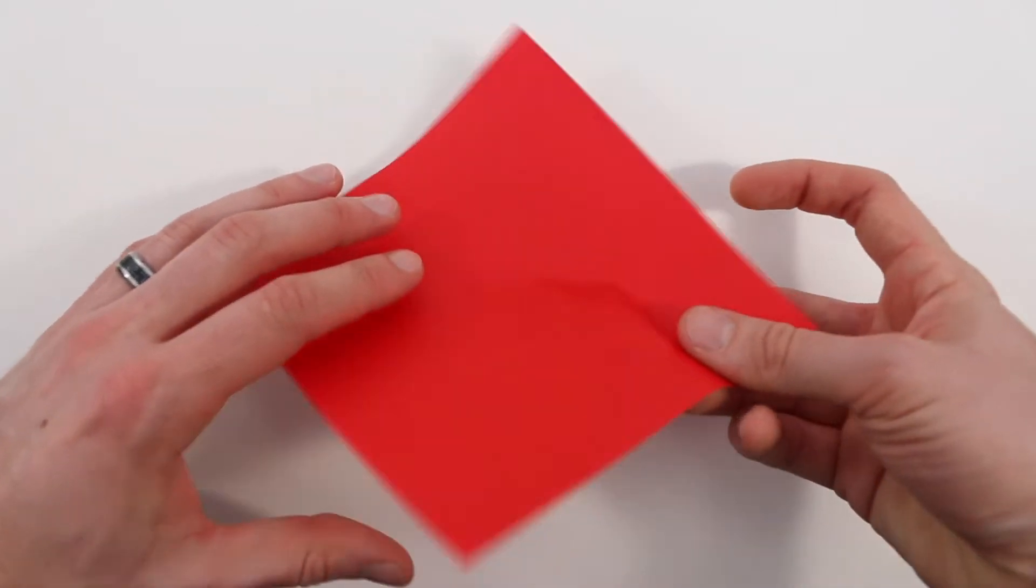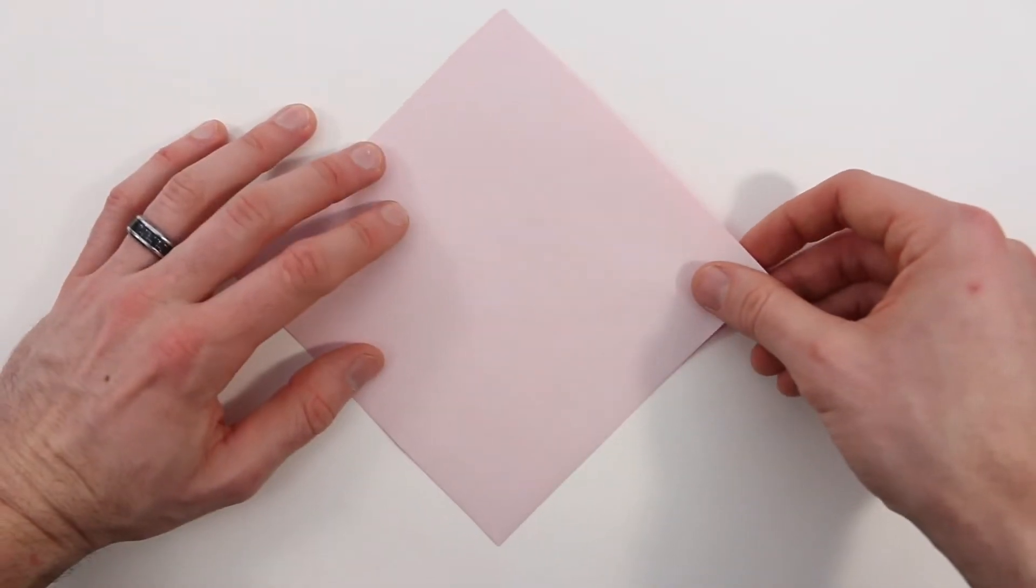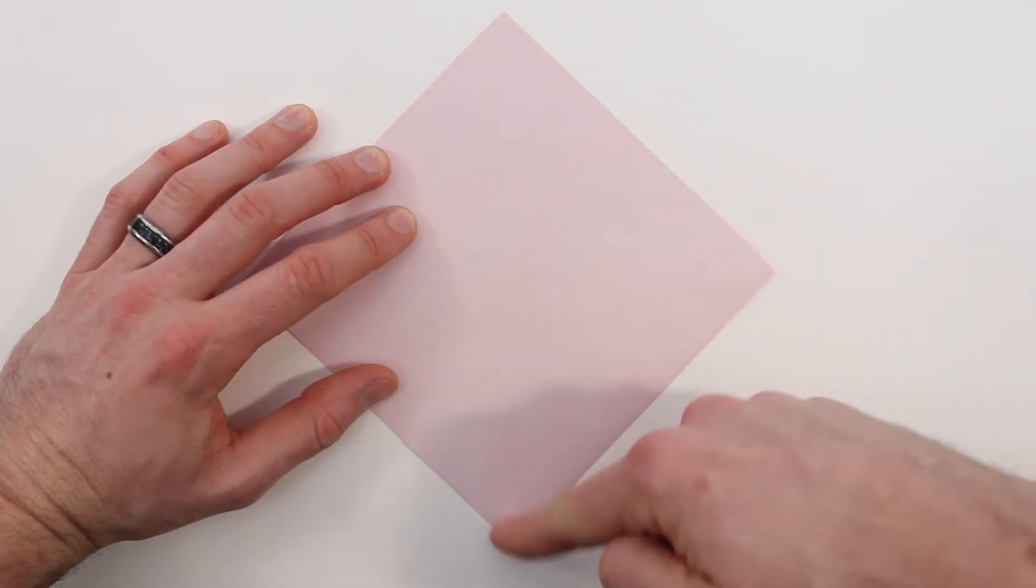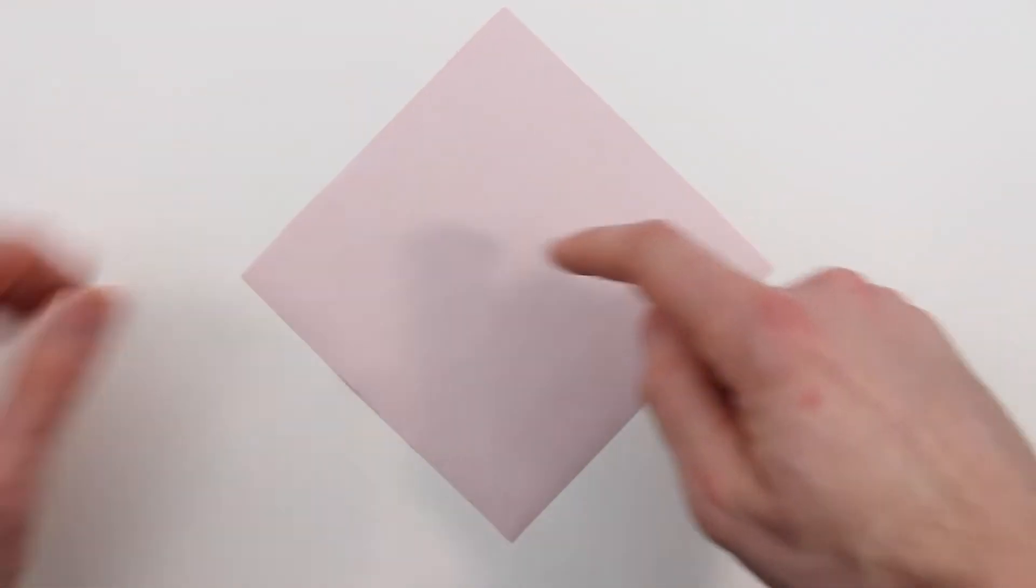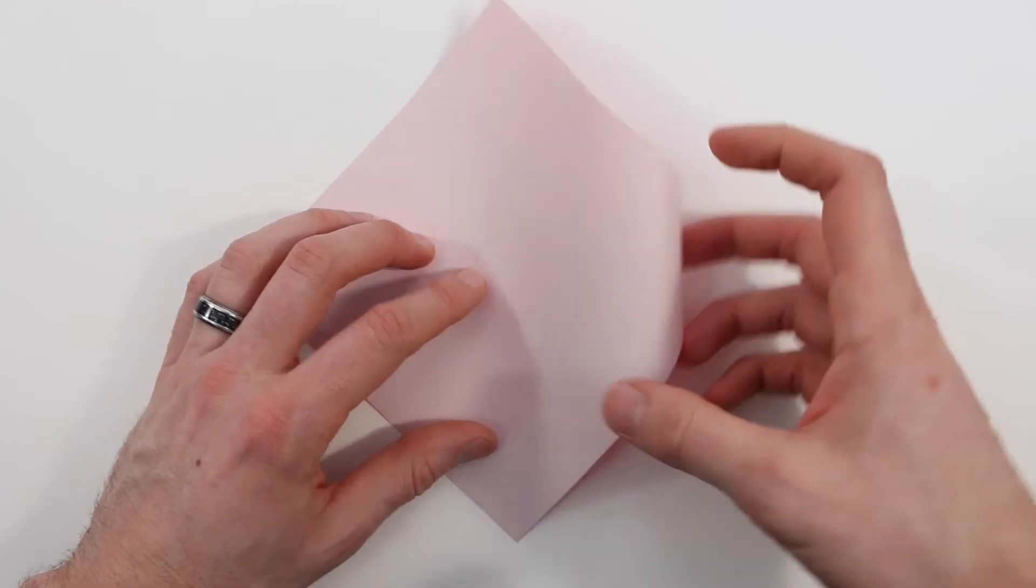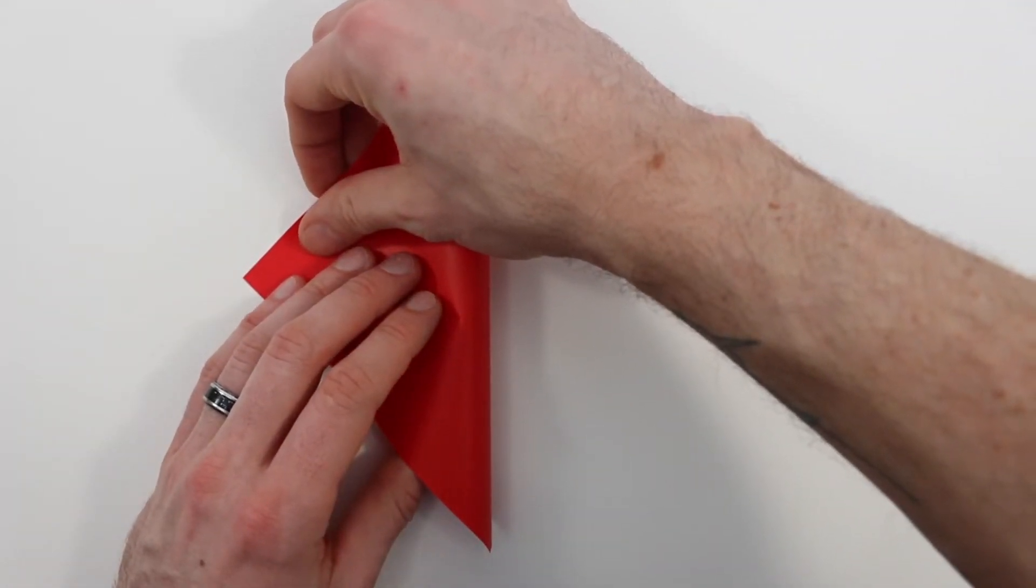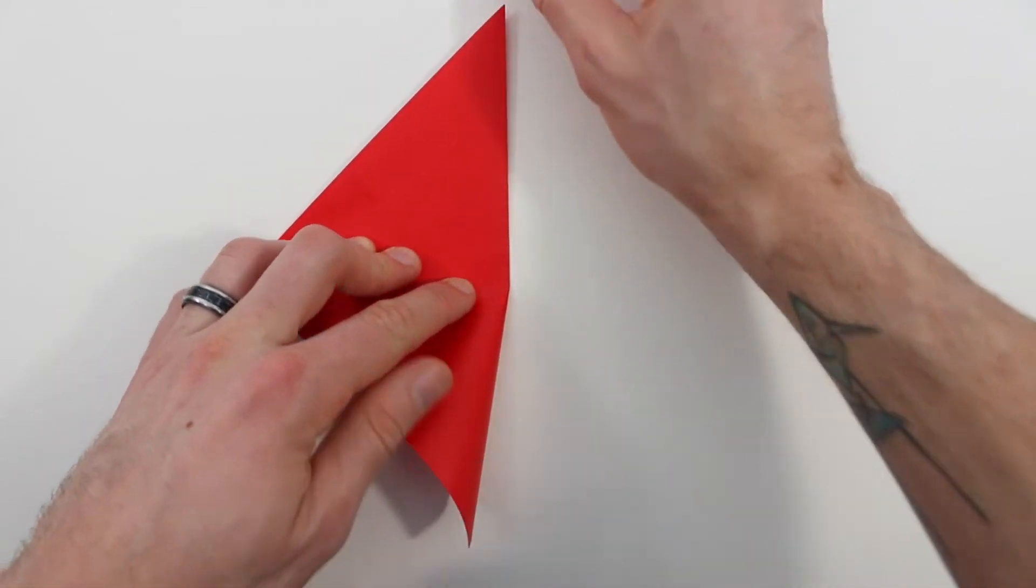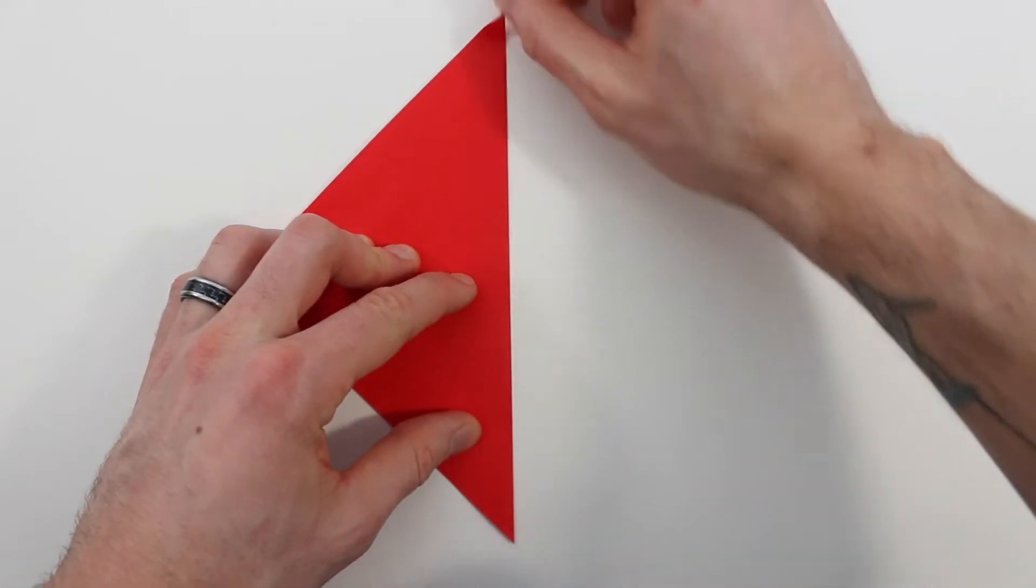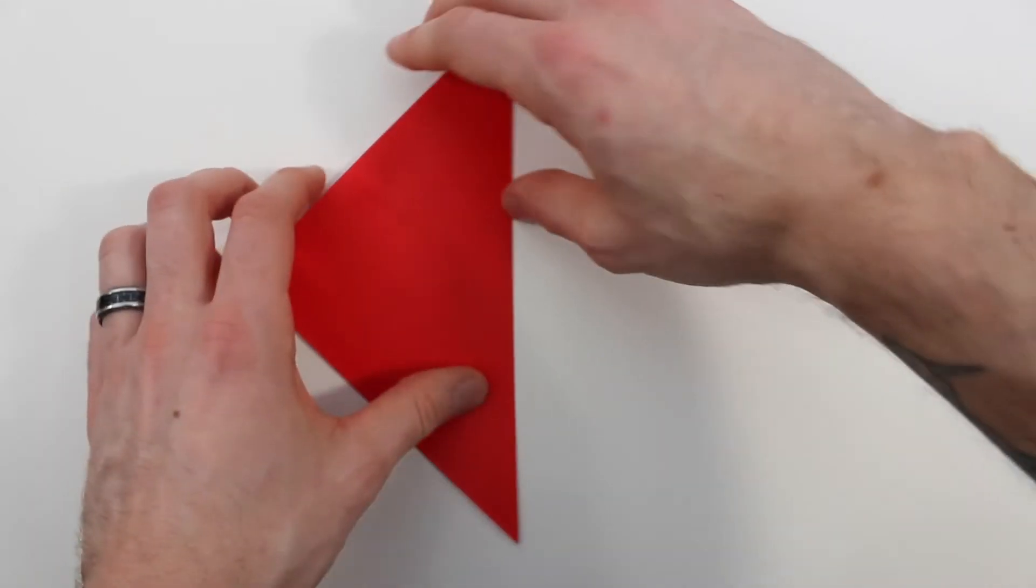Now we're going to start with the colored side down. We'll valley fold in half along this diagonal, so I'll bring the right corner over to the left corner. Just line both of those corners up, and then crease it all the way across. And now unfold.